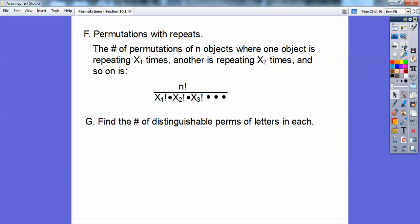Find the number of distinguishable permutations of the letters in each: SOCCER and TALLAHASSEE. On this one, it's going to be 1, 2, 3, 4, 5, 6, so 6 factorial. And because I have two c's repeating, it's going to be over 2 factorial on the bottom.